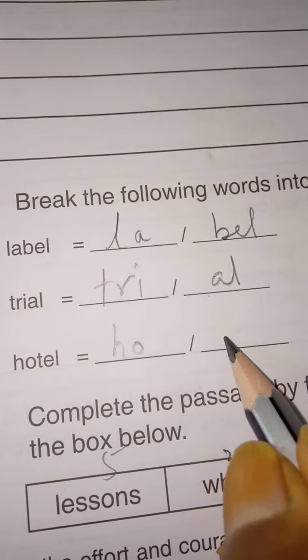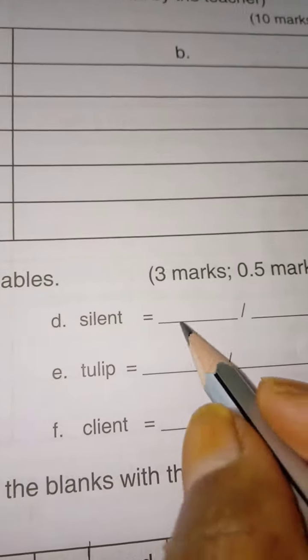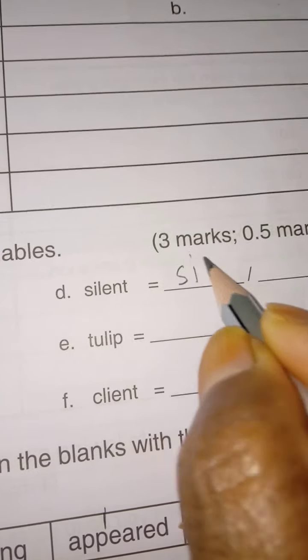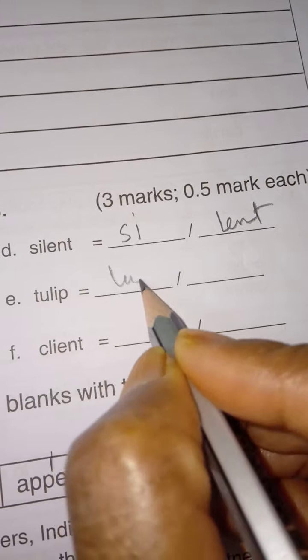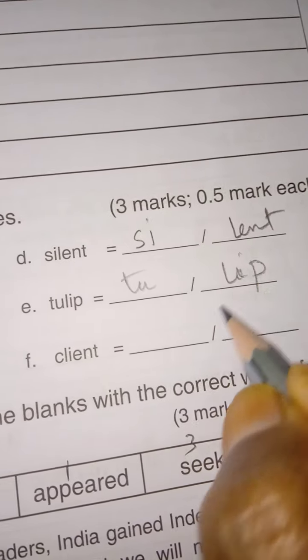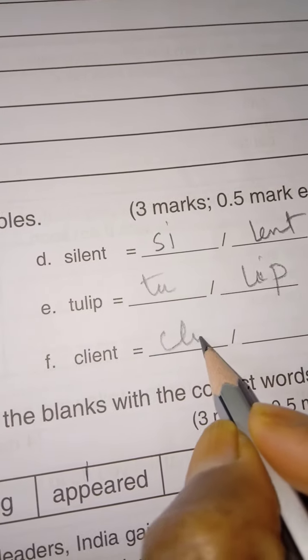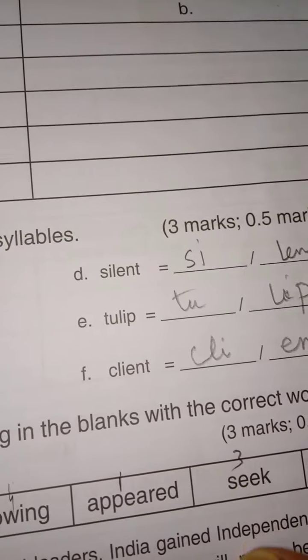HO. TEN. Like this you have to break it into syllables. SI. LENT. TU. LIP. CLI. ENT. This is how we are going to break the words into syllables.